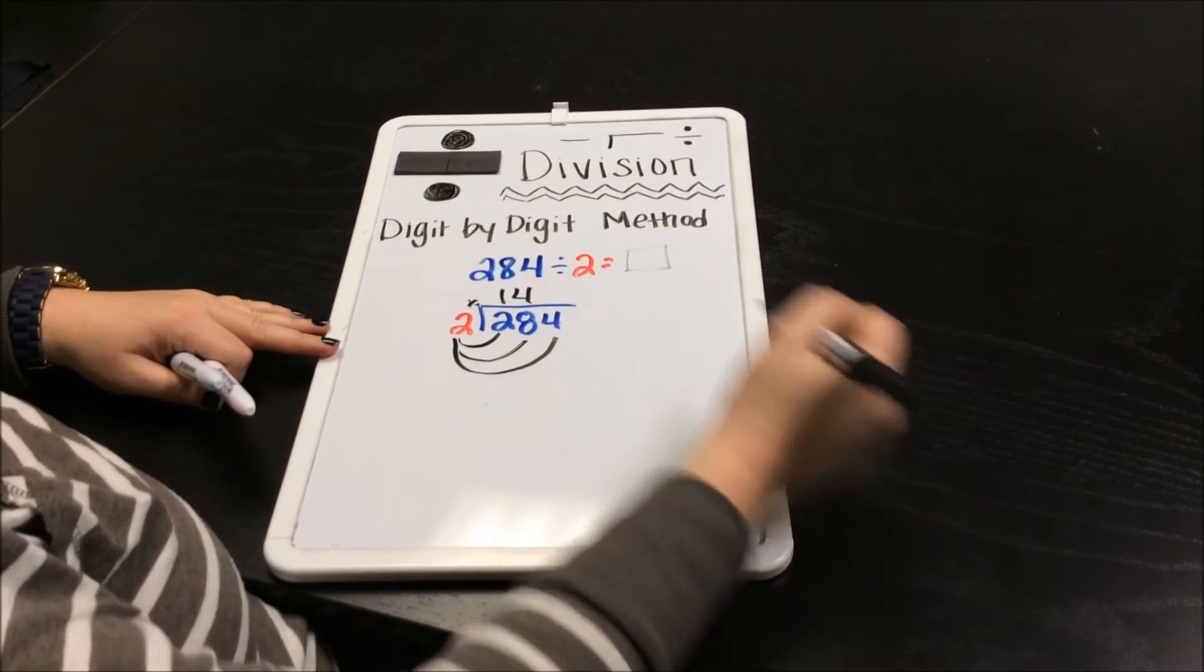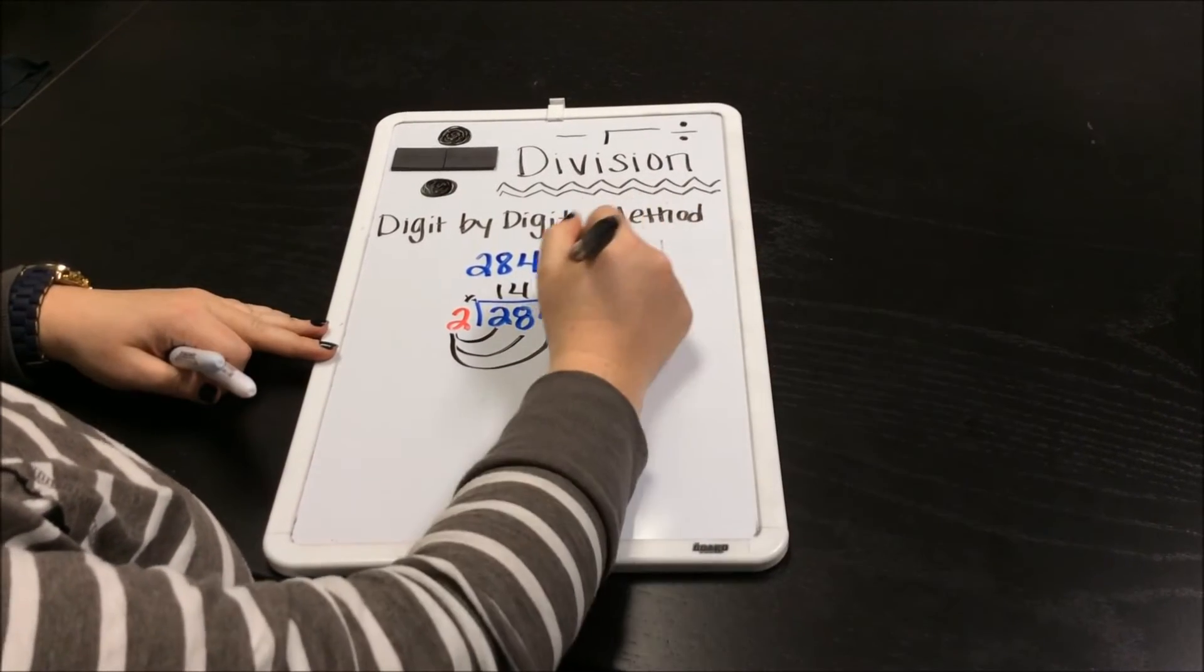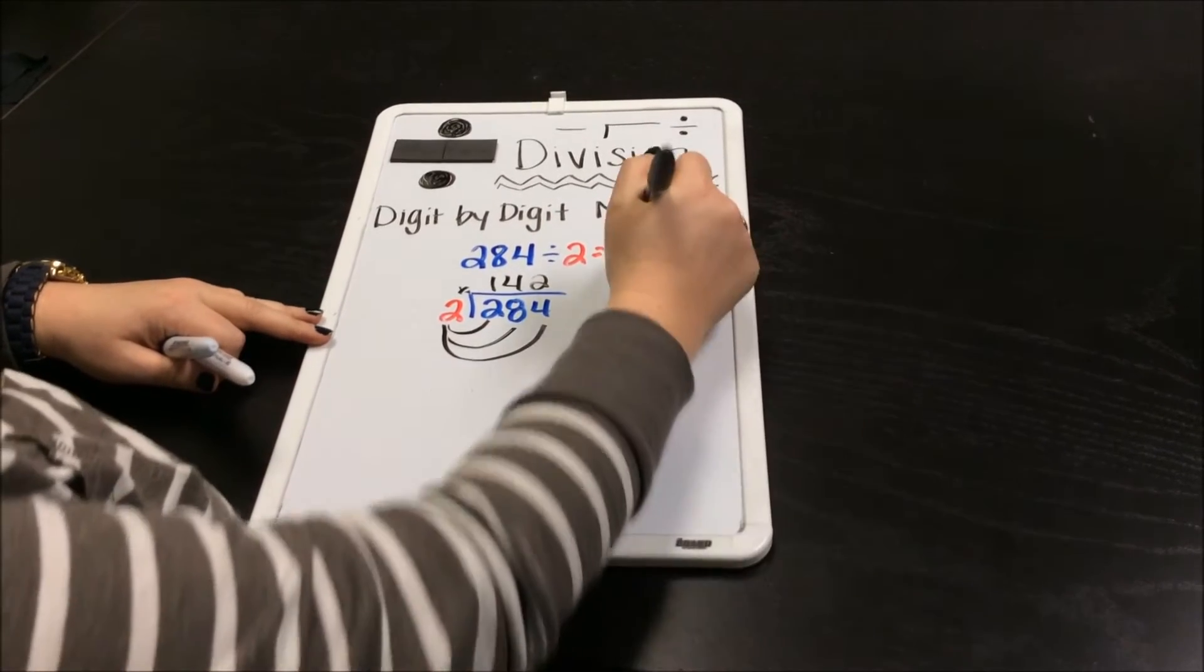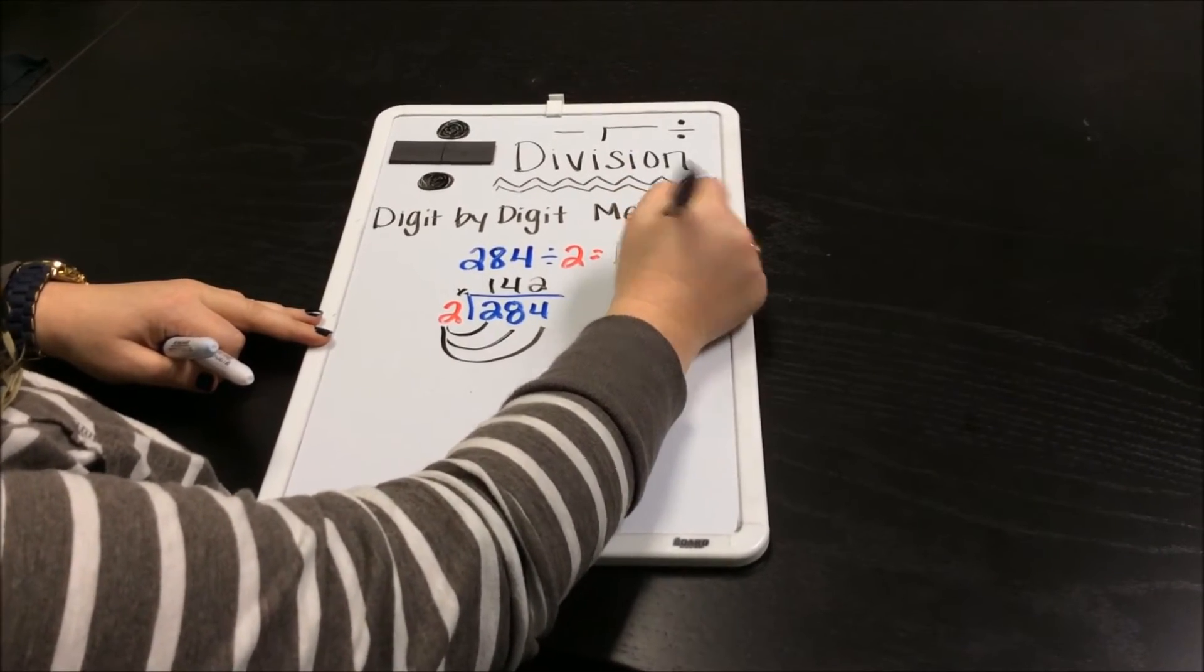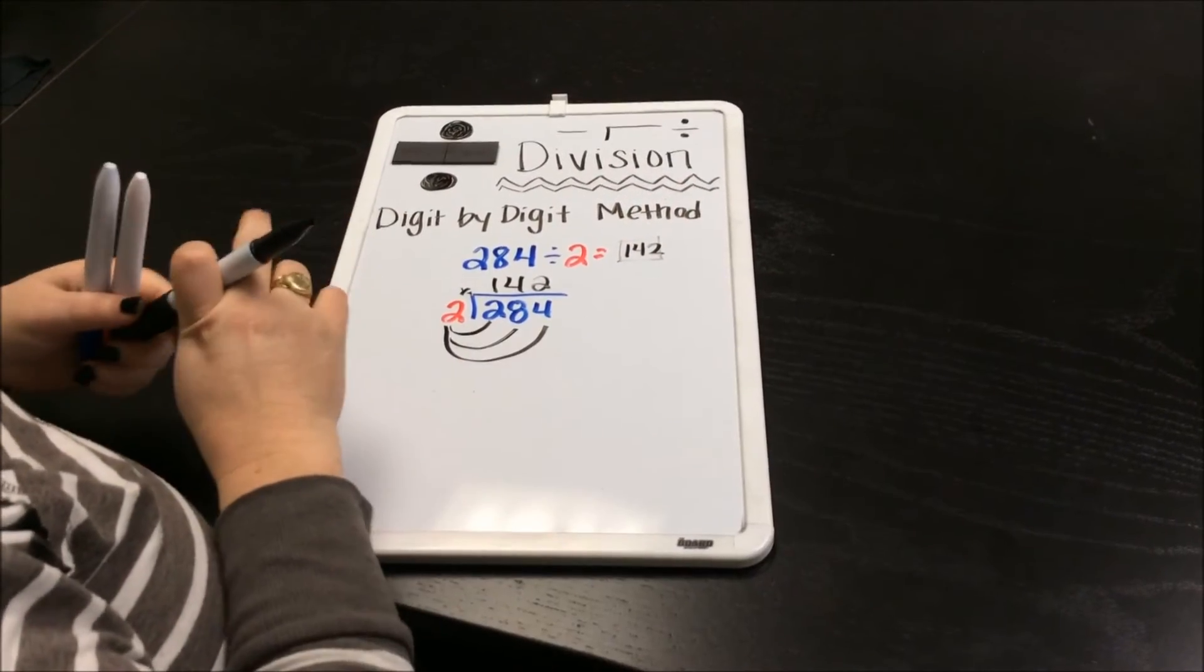And then the last digit, 2 times 2 gets you 4. So that would be our quotient, our answer to the division problem, 142.